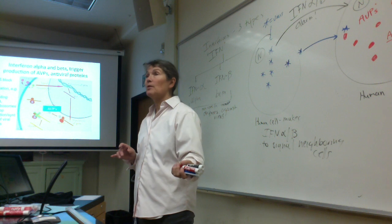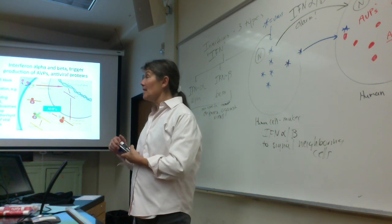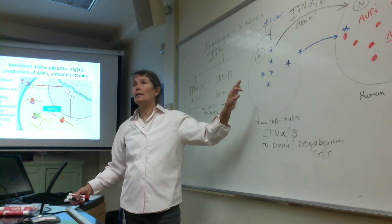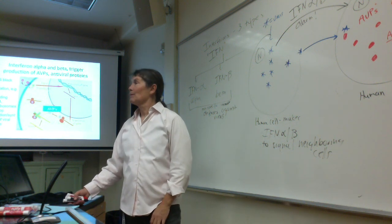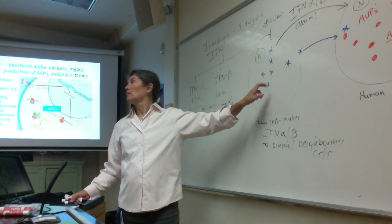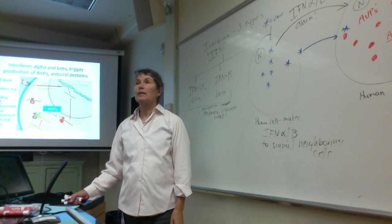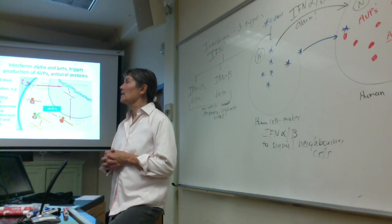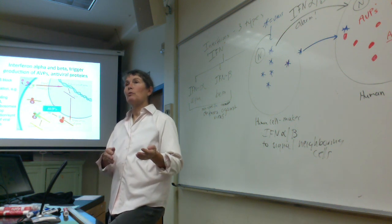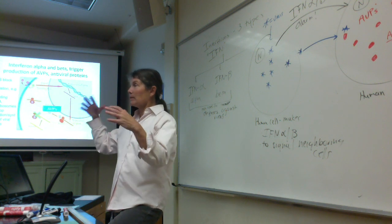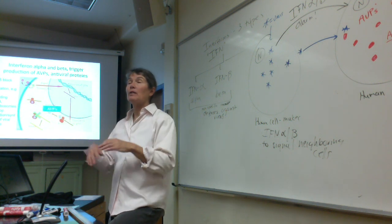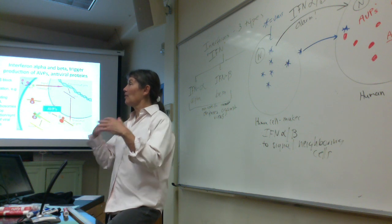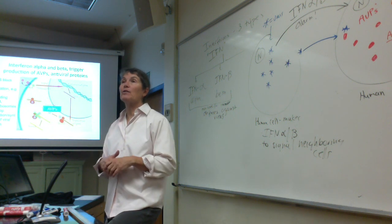The problems with interferons are that not all cells can make alpha and beta interferon, and not all viruses trigger alpha and beta interferon production. But consider how many different strategies our bodies have evolved to protect against viruses — no single strategy protects against all pathogens. We have multiple different strategies that hopefully, in combination, help us survive and maintain relatively good health against this wide range of microbes.